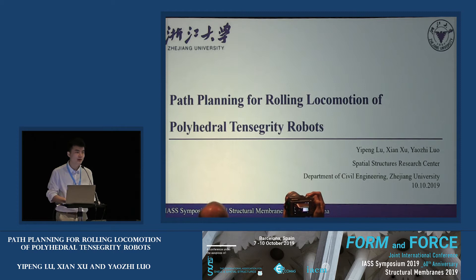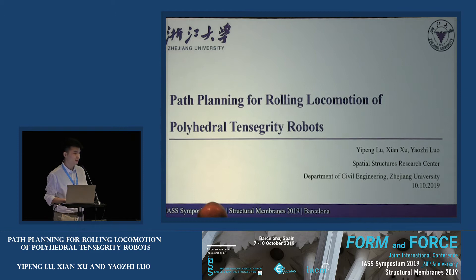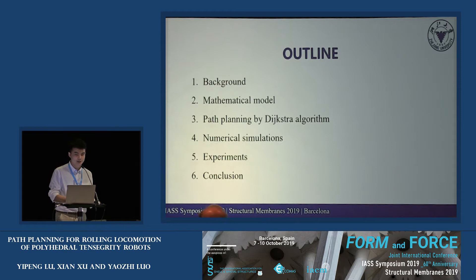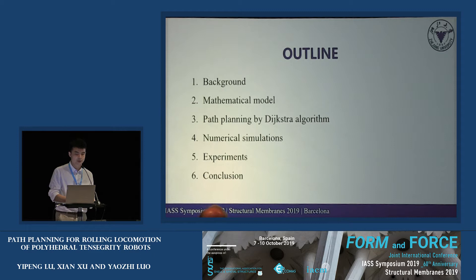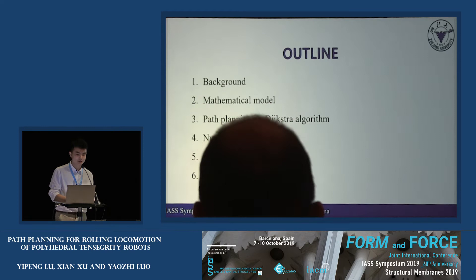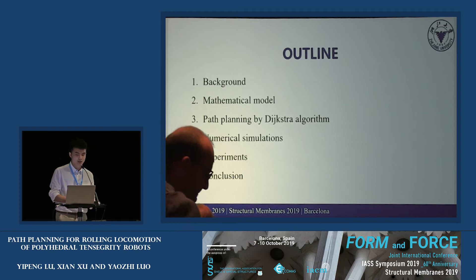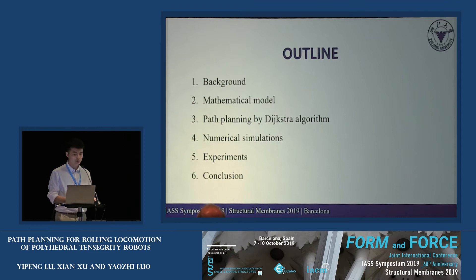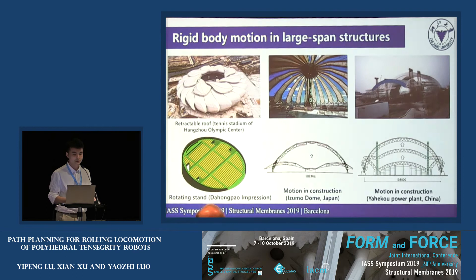Thank you for awarding the Hangai Prize, and thanks to the great work by the committee of IASS. The title of my presentation is 'Path Planning for Rolling Locomotion of Polyhedral Tensegrity Robots.' The outline includes: part one, background of tensegrity robots; part two, the mathematical model; section three, the algorithm; section four, typical examples with a real-world six-bar tensegrity robot; section five, experimental validations; and finally, the conclusion.